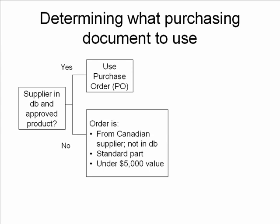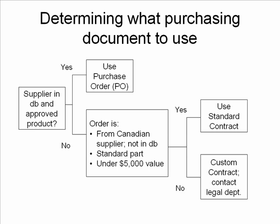If that's not the case, we ask: is it from a Canadian supplier not in the database? Is it a standard part that's already been approved? Is the total value of the order under $5,000? If it meets all of those criteria, we can use a standard contract — a little longer than the purchase order but easy to fill out. If we don't meet all three criteria, we have to do a custom contract and get in contact with the legal department.